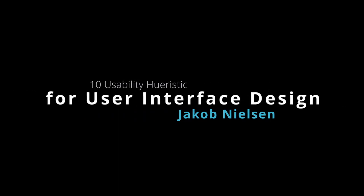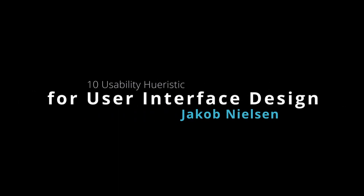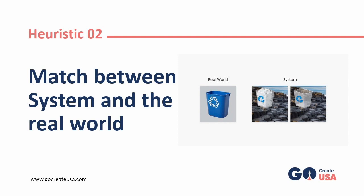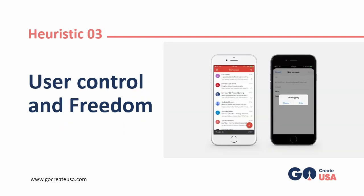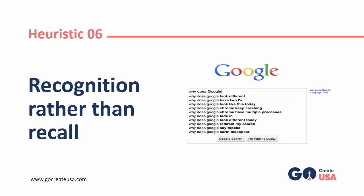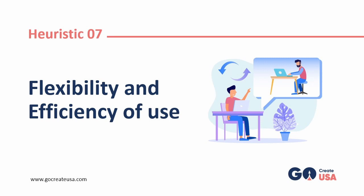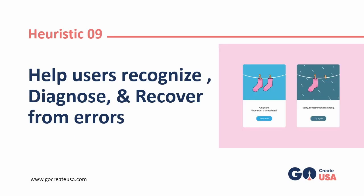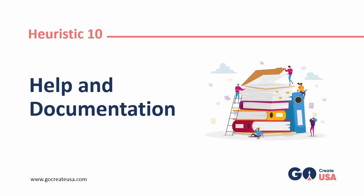The 10 usability heuristics for user interface design by Jacob Nielsen are: 1. Visibility of system status. 2. Match between system and the real world. 3. User control and freedom. 4. Consistency and standards. 5. Error prevention. 6. Recognition rather than recall. 7. Flexibility and efficiency of use. 8. Aesthetic and minimalist design. 9. Help users recognize, diagnose and recover from errors. 10. Help and documentation.